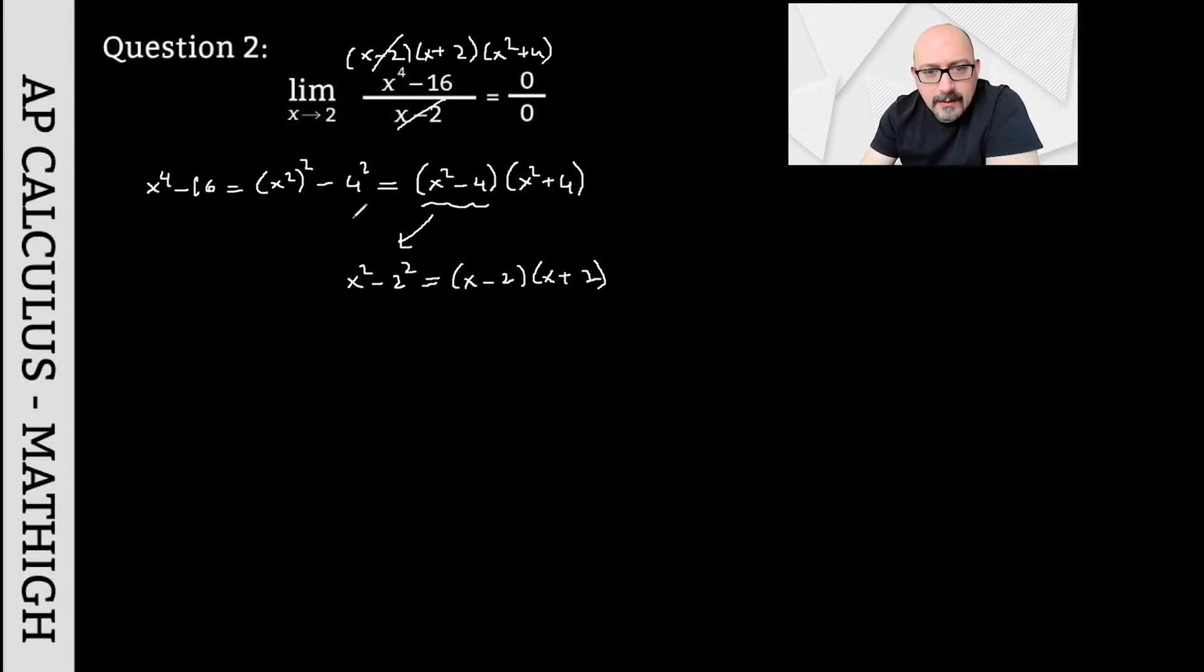In this case, the top becomes (x-2) times (x+2) times (x²+4). I simplified the (x-2) terms. So the limit as x approaches 2 becomes (x+2) times (x²+4). When I substitute 2 for x, I find this to be 4 times 8, so the answer is 32.